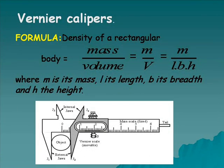Vernier Calipers. Formula: Density of a rectangular body is equal to mass by volume, which is equal to M by V, which is equal to M by L, B, H.